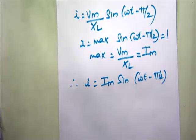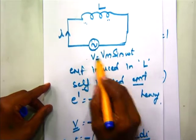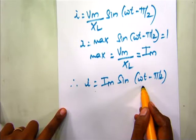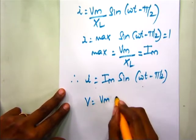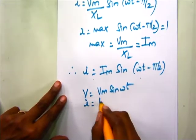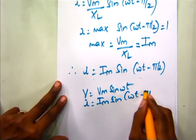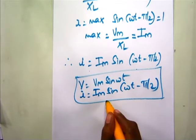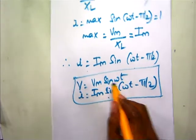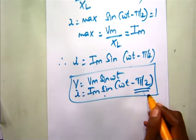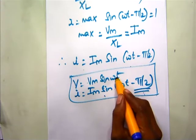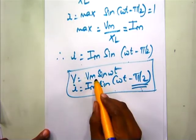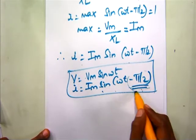We started with the voltage applied to the inductor as Vm sin omega t, and derived that the current through the inductor is Im sin of omega t minus pi by 2. From both these expressions it can be concluded that in case of an inductor, the current lags the voltage by an angle of pi by 2. For the resistor, V and I are both Vm sin omega t — they are in phase. But for the inductor, if V is Vm sin omega t, the current lags by an angle of pi by 2.